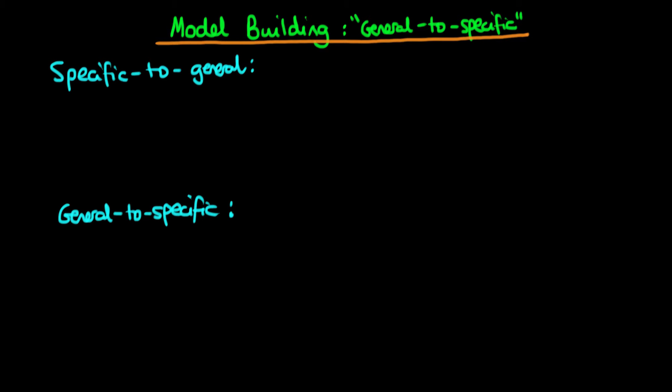In order to illustrate the benefit of this particular process, I first want to talk about the opposite of it, which we could call specific-to-general modelling. Sometimes it's also known as forward stepwise regression.